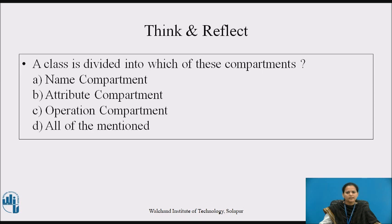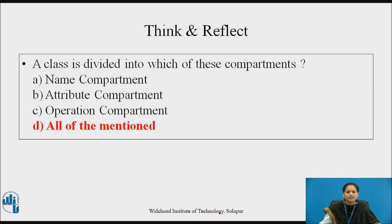Here is a time for think and reflect. Pause the video and try to answer: a class is divided into which compartments? The answer is all of them — name, attributes, and operations — because as we have seen in the example class diagram, each class is represented as a rectangle with three different compartments: first for its name, second for the list of attributes, and third for the list of operations.